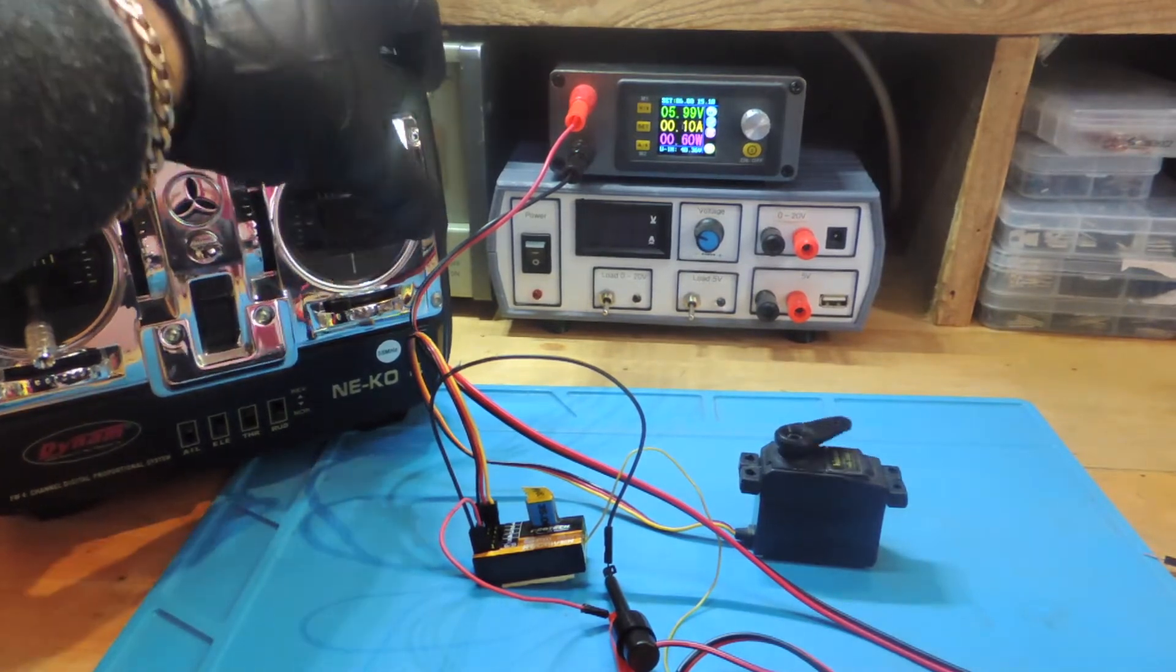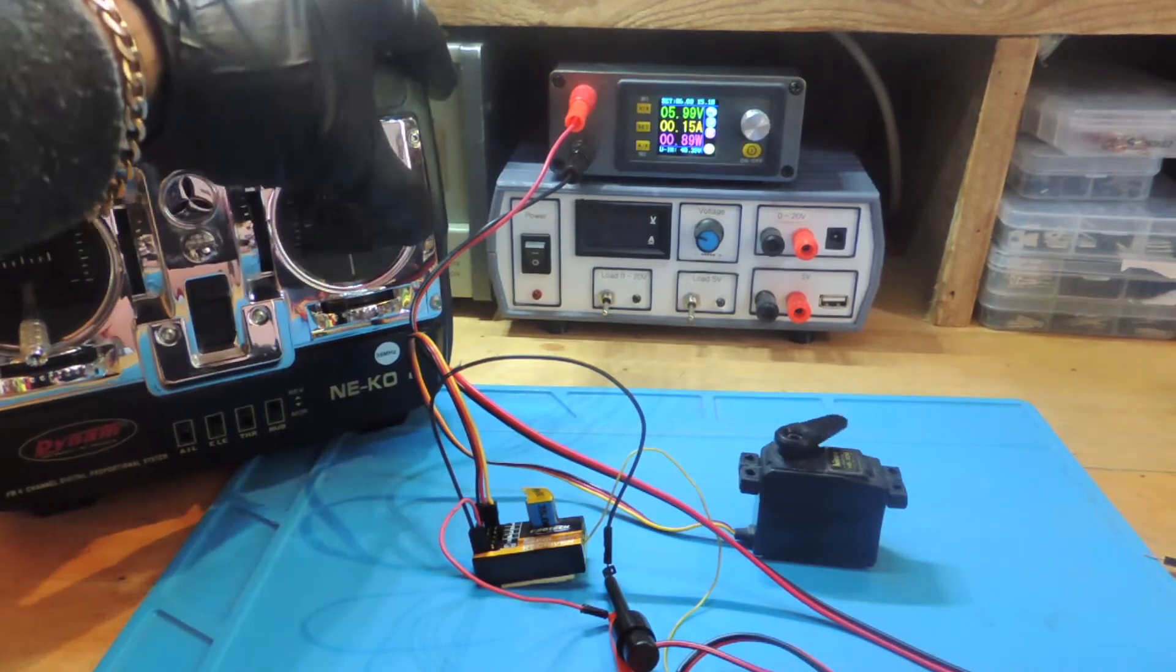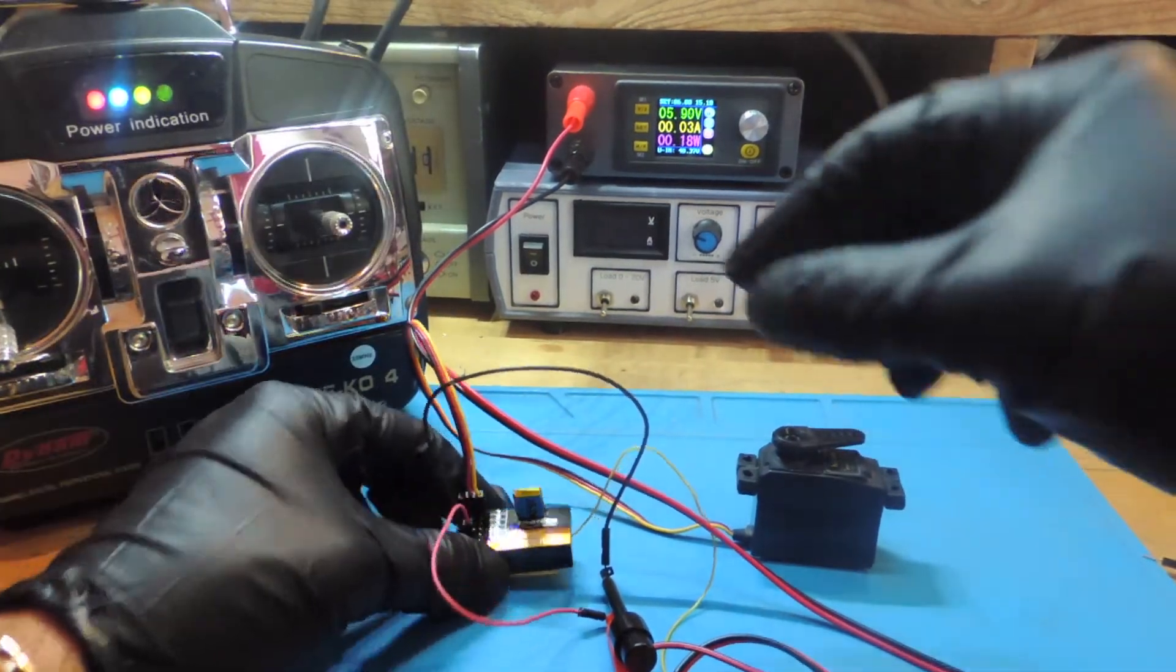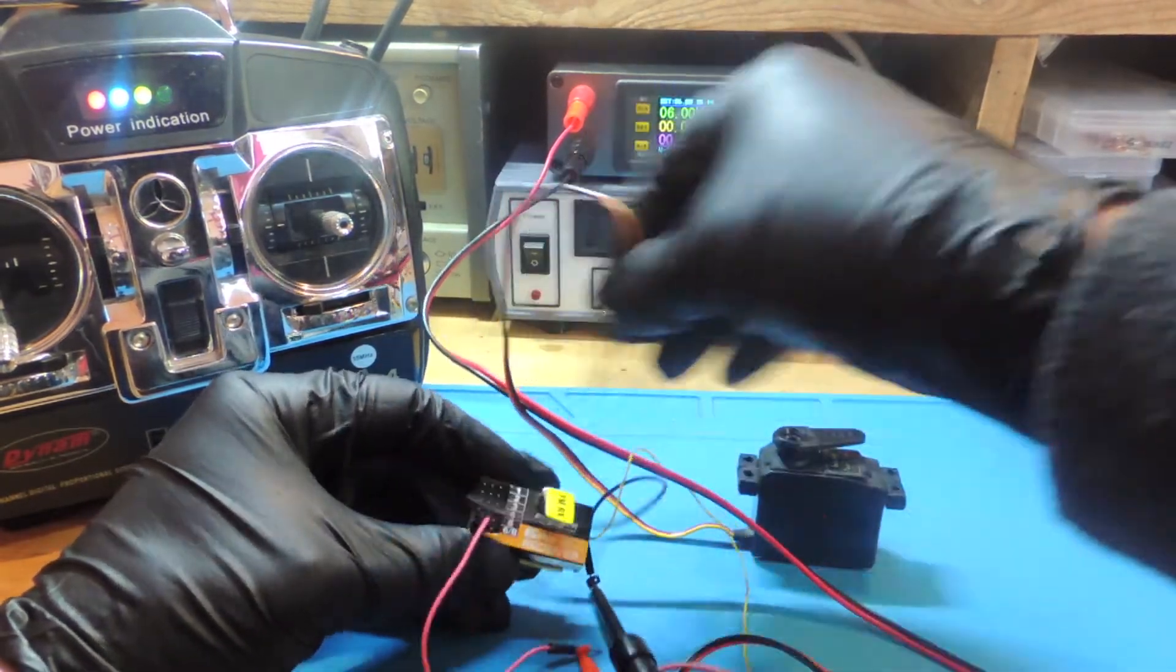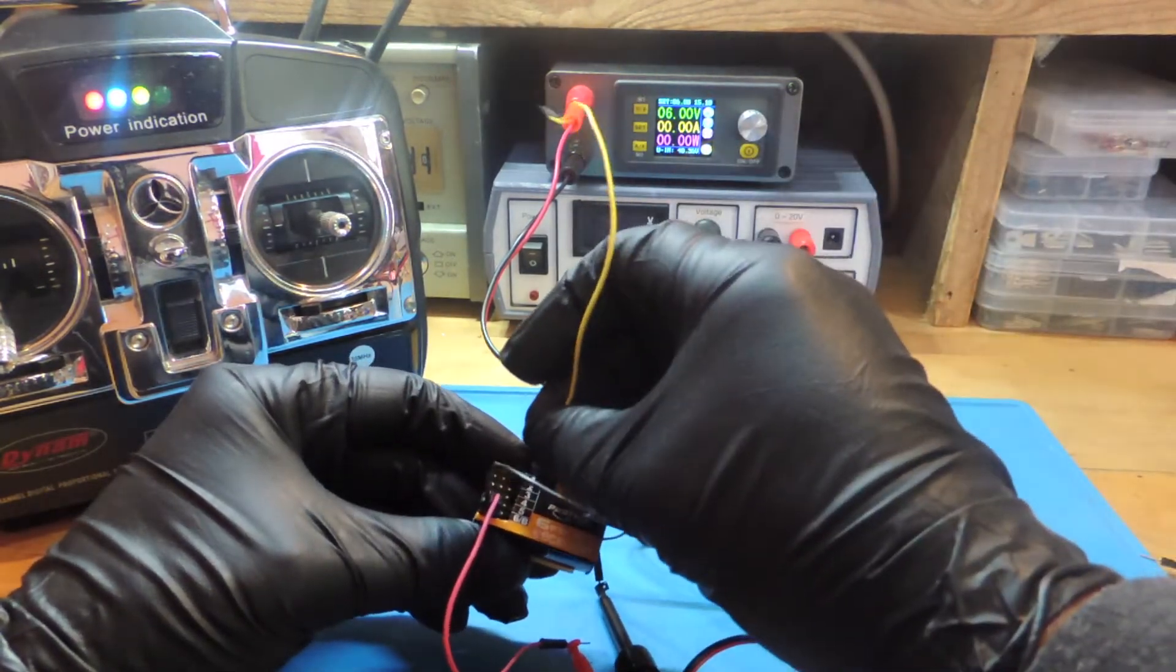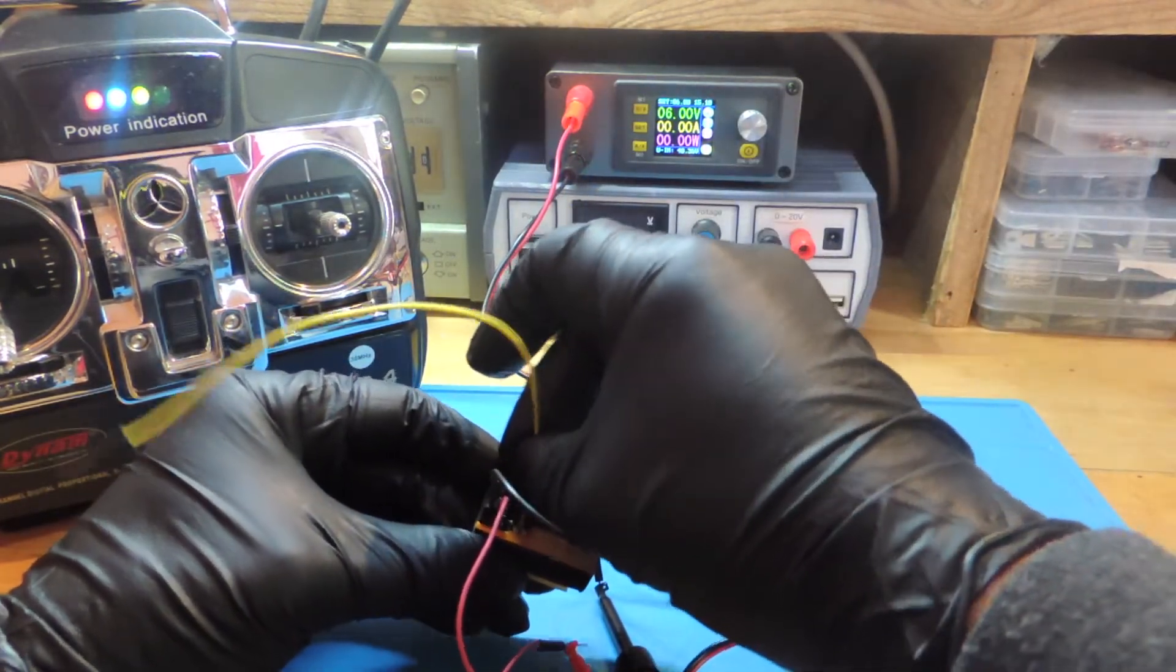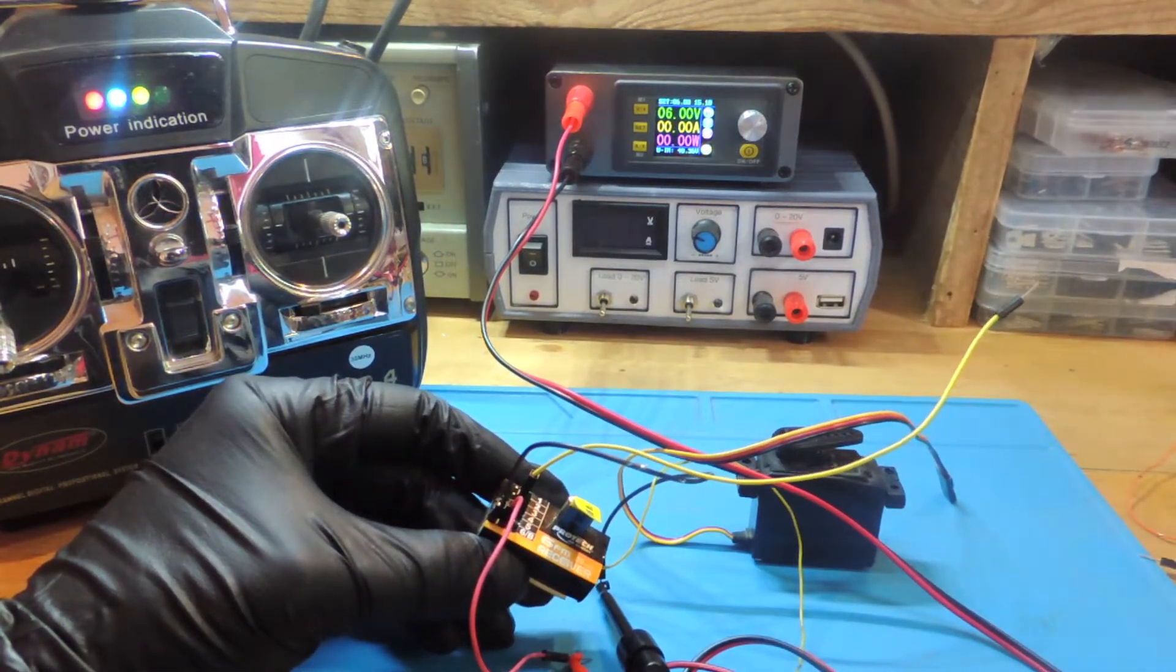Our servo is working well. Before showing you the next way, let's analyze the nature of the signal we have in our receiver when you move the sticks of the radio. So let's hook up cables to the signal and ground pins of the receiver and analyze with the oscilloscope.